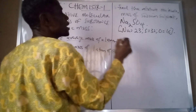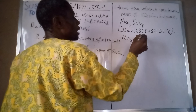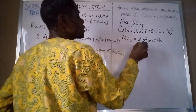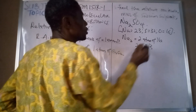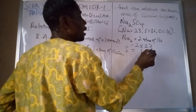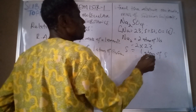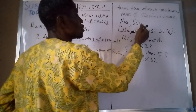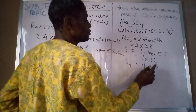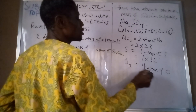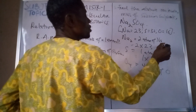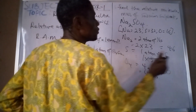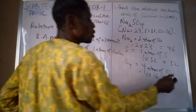Now, analysis of this compound tells us: we have two atoms of sodium, so that is 2 multiplied by 23. The second element is sulfur — we have one atom of sulfur, so that is 1 multiplied by 32. And the last element is oxygen — we have four atoms of oxygen in the compound, so that is 4 multiplied by 16. Calculating: 2 times 23 gives us 46; 1 times 32 gives us 32; and 4 times 16 gives us 64.